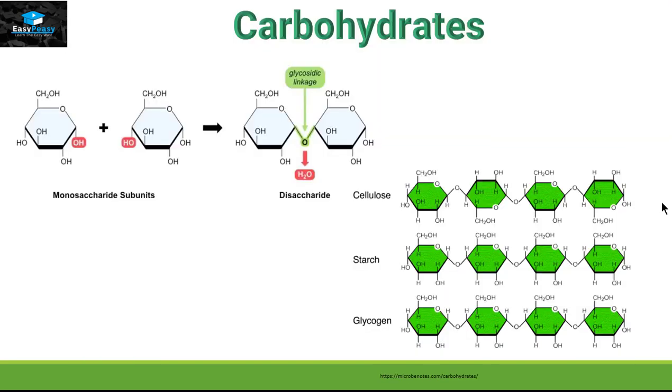The first macromolecule we are going to discuss is carbohydrates. As you can see, this is the example of carbohydrates present in living organisms. That includes glycogen, starch, and cellulose. Now these carbohydrates are the repetitive units of monosaccharide units. When two monosaccharide units link with each other by the bond called glycosidic linkage, they are called disaccharide.